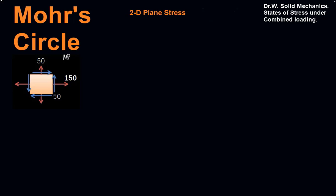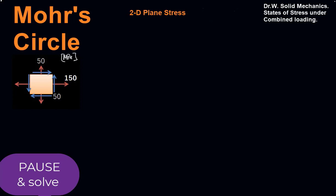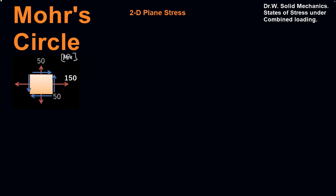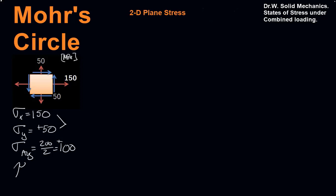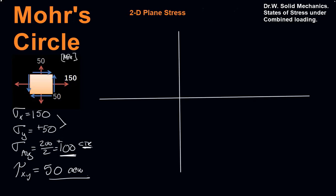Let's try one from scratch in MPa. We have 150 in tension on the x-face, 50 in tension on the y-face, and a shear of 50 MPa on all faces — all tip-to-tip or tail-to-tail, which is appropriate. Step one: sigma x is 150, sigma y is positive 50, stress average is 200 over 2, which is 100 MPa. Tau x-y is 50, and we observe it's counterclockwise. That 100 is the center of our circle. Now let's draw out the circle.